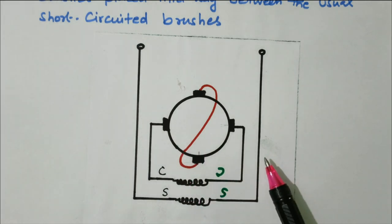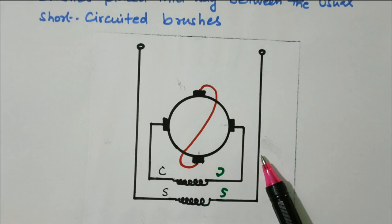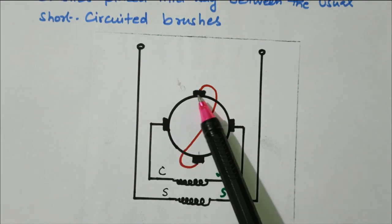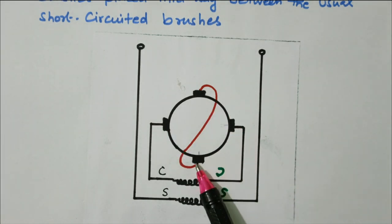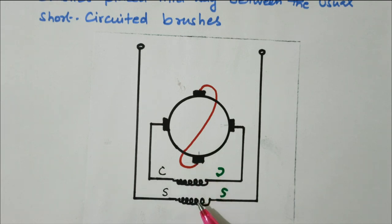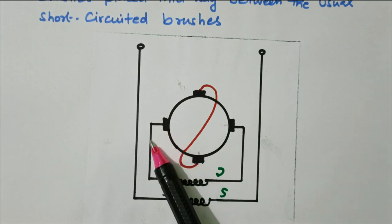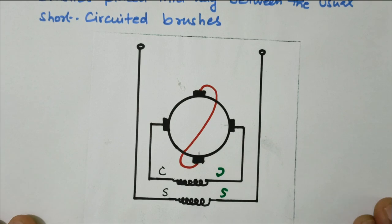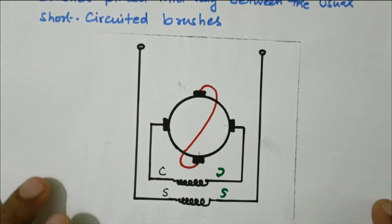In a repulsion motor, the torque development and rotation are determined by the shifting of the brushes. This is the brush position — full details about brush positioning are available in the repulsion motor video. Here, the compensating winding is connected in the rotor circuit.